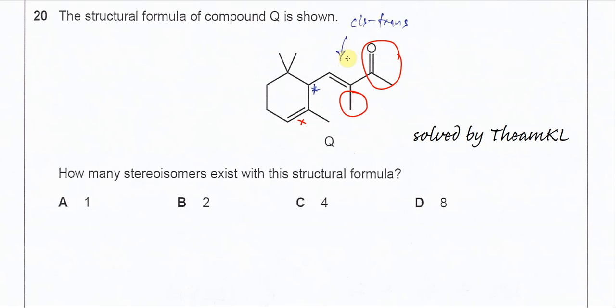So two plus two. So here is two and plus two. Total you get four stereoisomers. Answer is C. That's all, thank you.